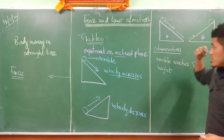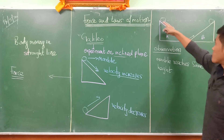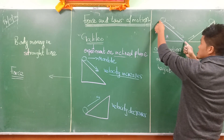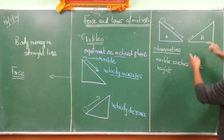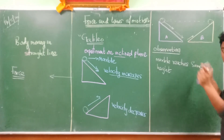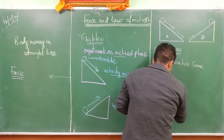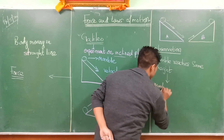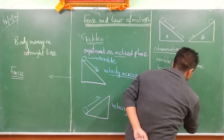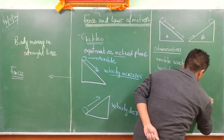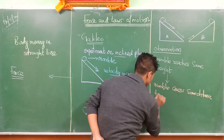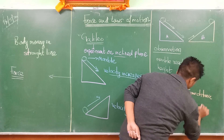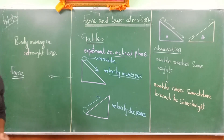The marble covers the same distance to reach the same height. So if the distance along inclined plane A is five centimeters, we can assume the distance along inclined plane B is also five centimeters, because they are the same. This was the first observation from the inclined plane experiment.